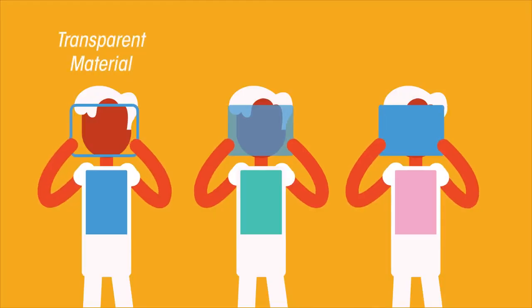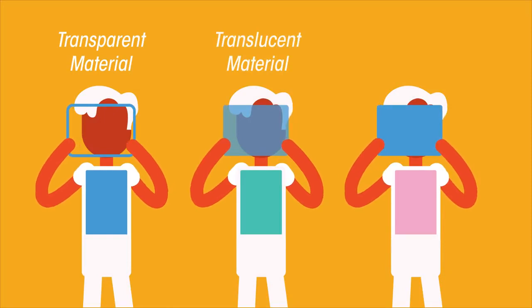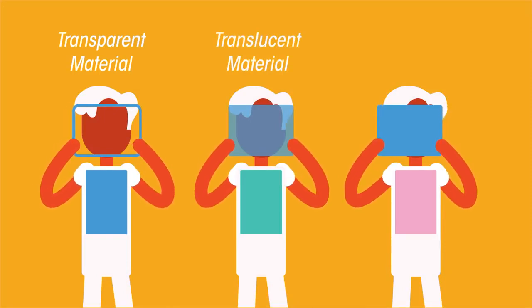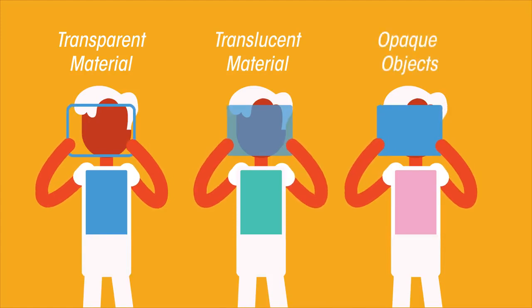Transparent materials allow light to pass through them. Translucent materials allow some light through, but not all. Opaque objects don't let any light pass through them, and so they cause shadows.